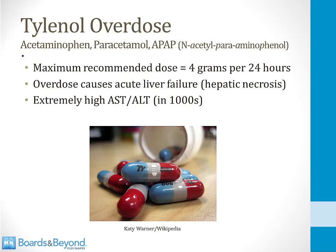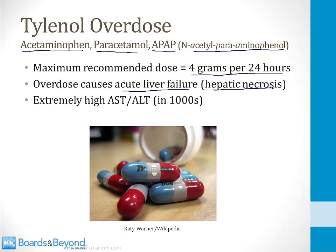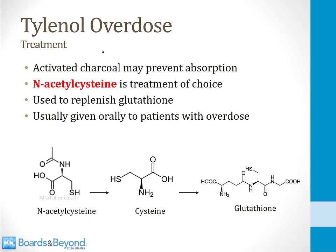Now let's talk about Tylenol overdose. Tylenol is a painkiller sold over-the-counter, so it is frequently taken in excess either by accident or as a suicide attempt. It can be called acetaminophen, paracetamol in many countries, and is often abbreviated APAP — standing for N-acetyl para-aminophenol. The maximum recommended dose is 4 grams over 24 hours. If you take too much, you can develop acute liver failure from hepatic necrosis, and just like viral hepatitis, a Tylenol overdose is one of the small number of disorders that cause AST and ALT levels to climb into the thousands. When treating Tylenol overdose, activated charcoal is often given to prevent absorption from the GI tract, but the mainstay of treatment is N-acetylcysteine, which is metabolized into cysteine and used to synthesize glutathione.